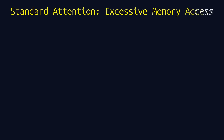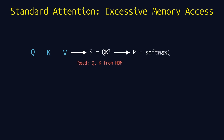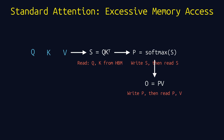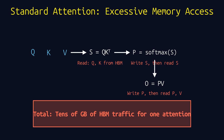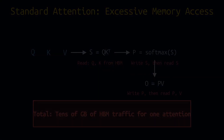Let's trace through standard attention and count the memory accesses. Step 1: compute Q·Kᵀ — we read Q and K from HBM. Step 2: apply softmax — we write the attention scores S back to HBM, then read them again. Step 3: multiply by V — we write the probabilities P to HBM, then read P and V back. Add it all up, and we're reading over 8 gigabytes from slow HBM for a single attention operation. Most of the time is spent waiting for these transfers, not computing.